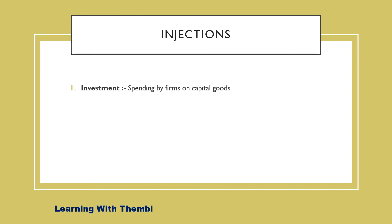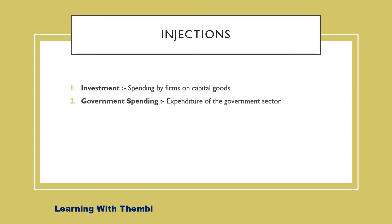They may also spend money on building up inventories and buying intermediary goods or raw materials. Secondly, we have government spending — the expenditure of the government sector. That is when the government spends money on goods and services produced by businesses to provide social and economic services and also to provide infrastructure. This counts as an injection.